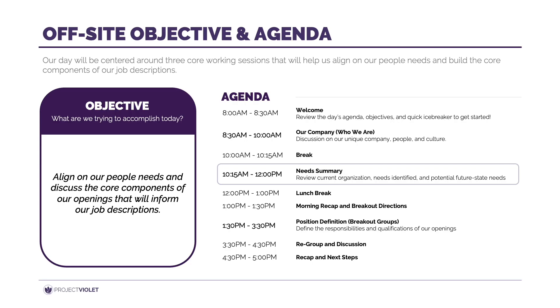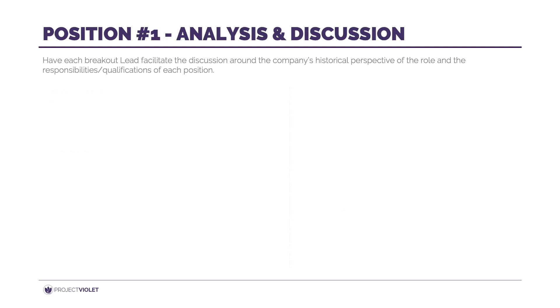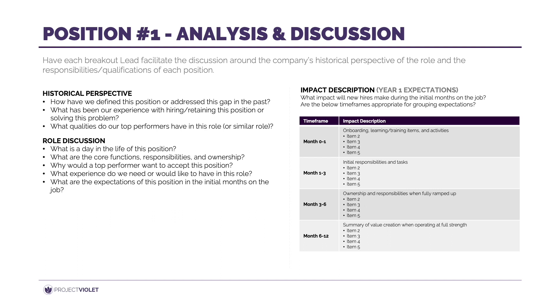The goal coming out of this section is to have a prioritized list of openings to start discussing in detail in the afternoon. After lunch and a recap of the morning, you can as a group start discussing the open positions in detail. This is where you can divide into smaller breakout groups with people related to each area or position. As the facilitator, you can bounce around the different groups, but make sure each breakout group has a lead to drive the conversation and take thorough notes.